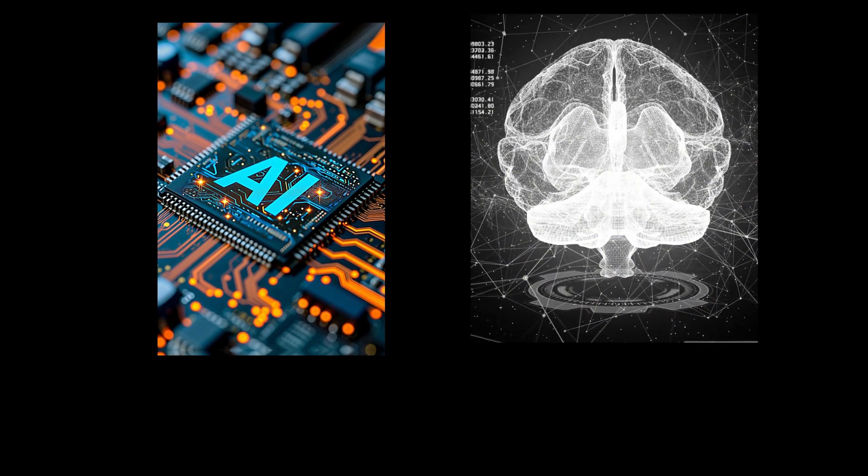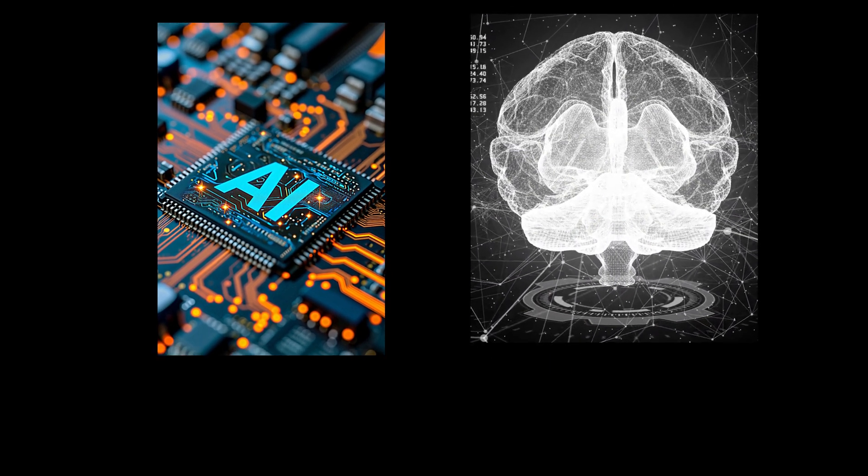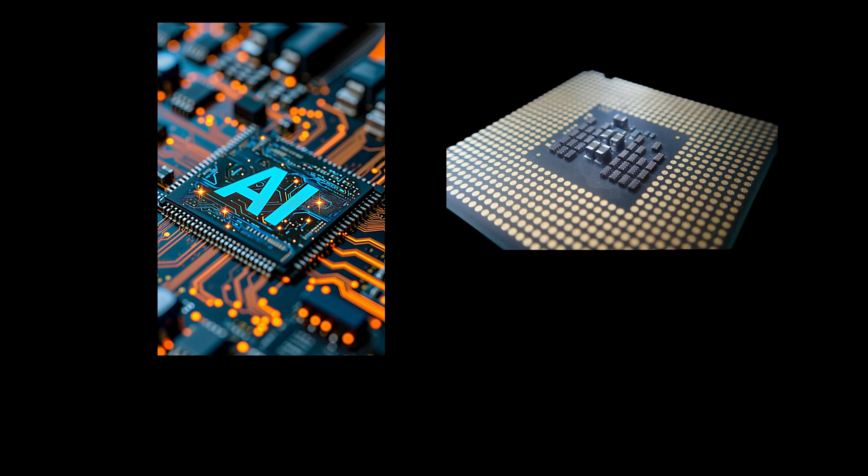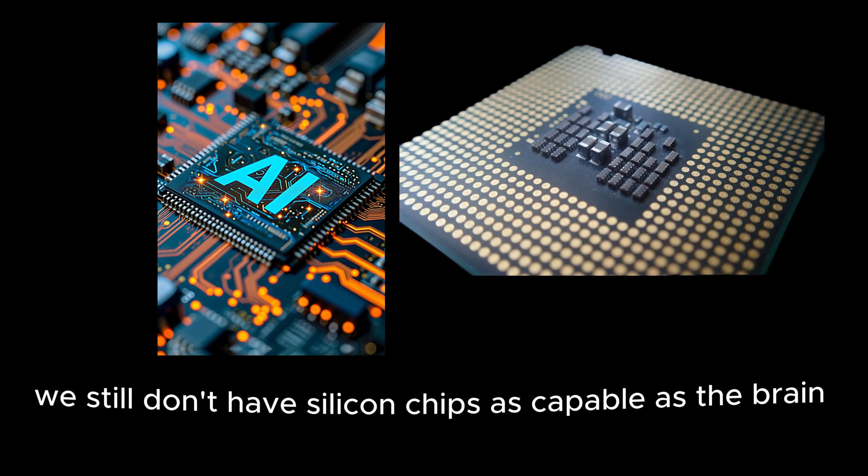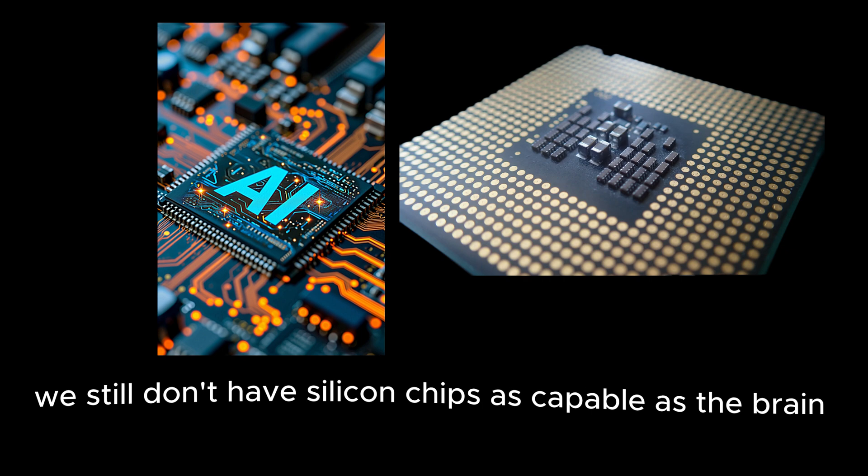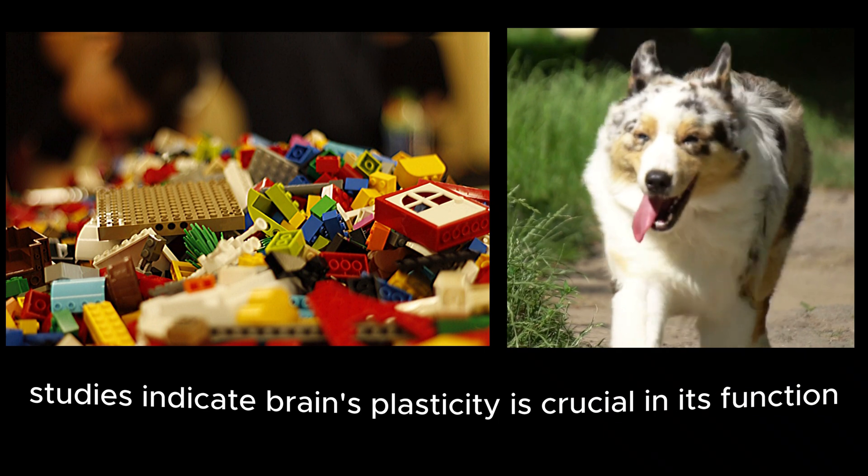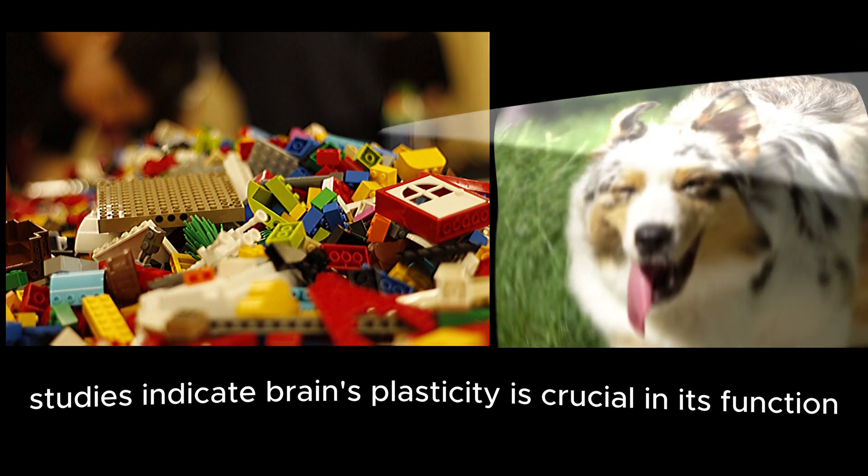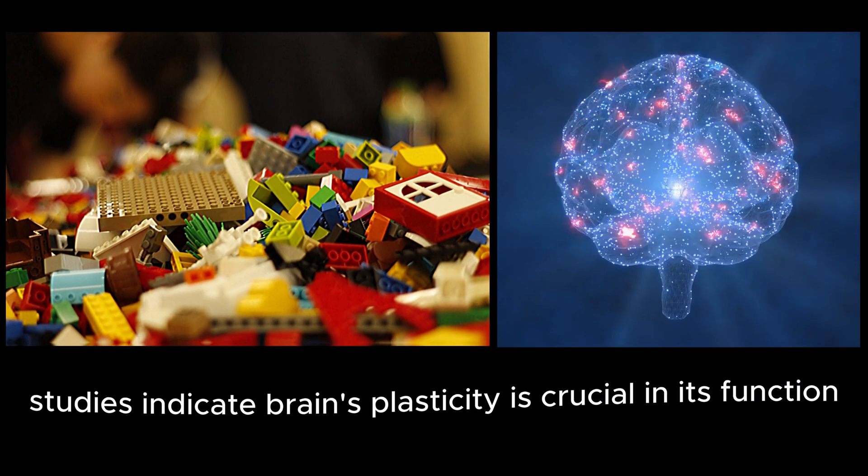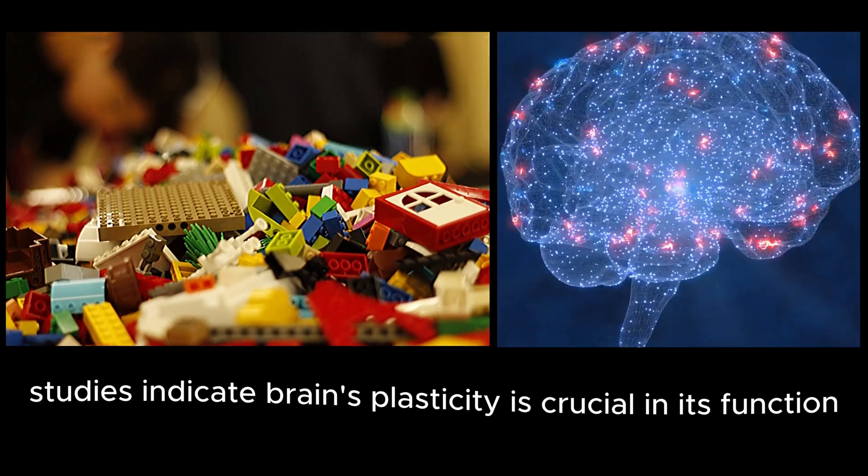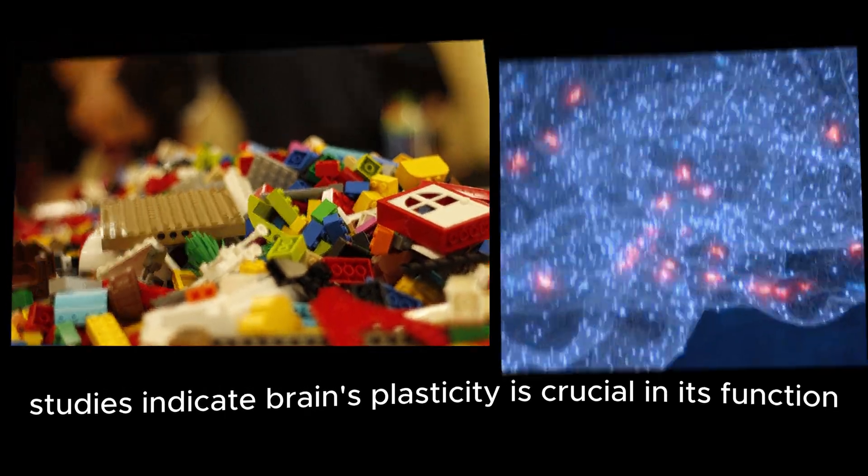Inspired by the brain's remarkable efficiency, researchers have tried to replicate its design using silicon chips. But these chips, despite their innovation, fall far short of nature's complexity. Think of it like trying to build a living dynamic system with Lego blocks. While effective in certain ways, they're rigid and fundamentally limited in design compared to the adaptable and complex human brain.